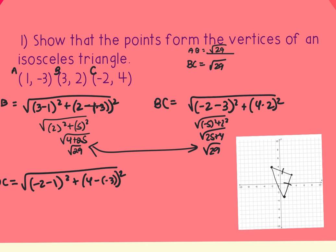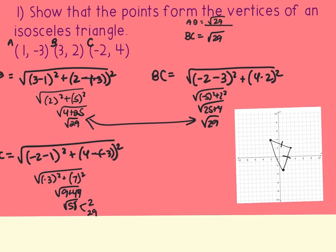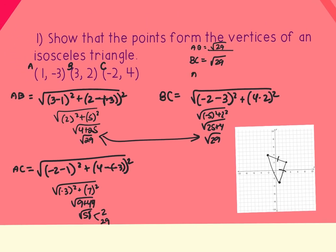But if the quiz wants you to classify it, you have to keep going and find all three side lengths. For AC I get negative 3 squared plus 7 squared, which is 9 plus 49, equaling 58. Since 58 factors as 2 times 29 and 29 doesn't break down further, AC stays as square root of 58.